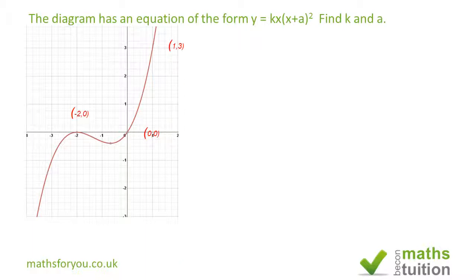For my first equation, I've used this coordinate here minus two zero, where y is zero and x is minus two. So I got zero equals minus two k into a minus two squared. I placed my axis with minus two.